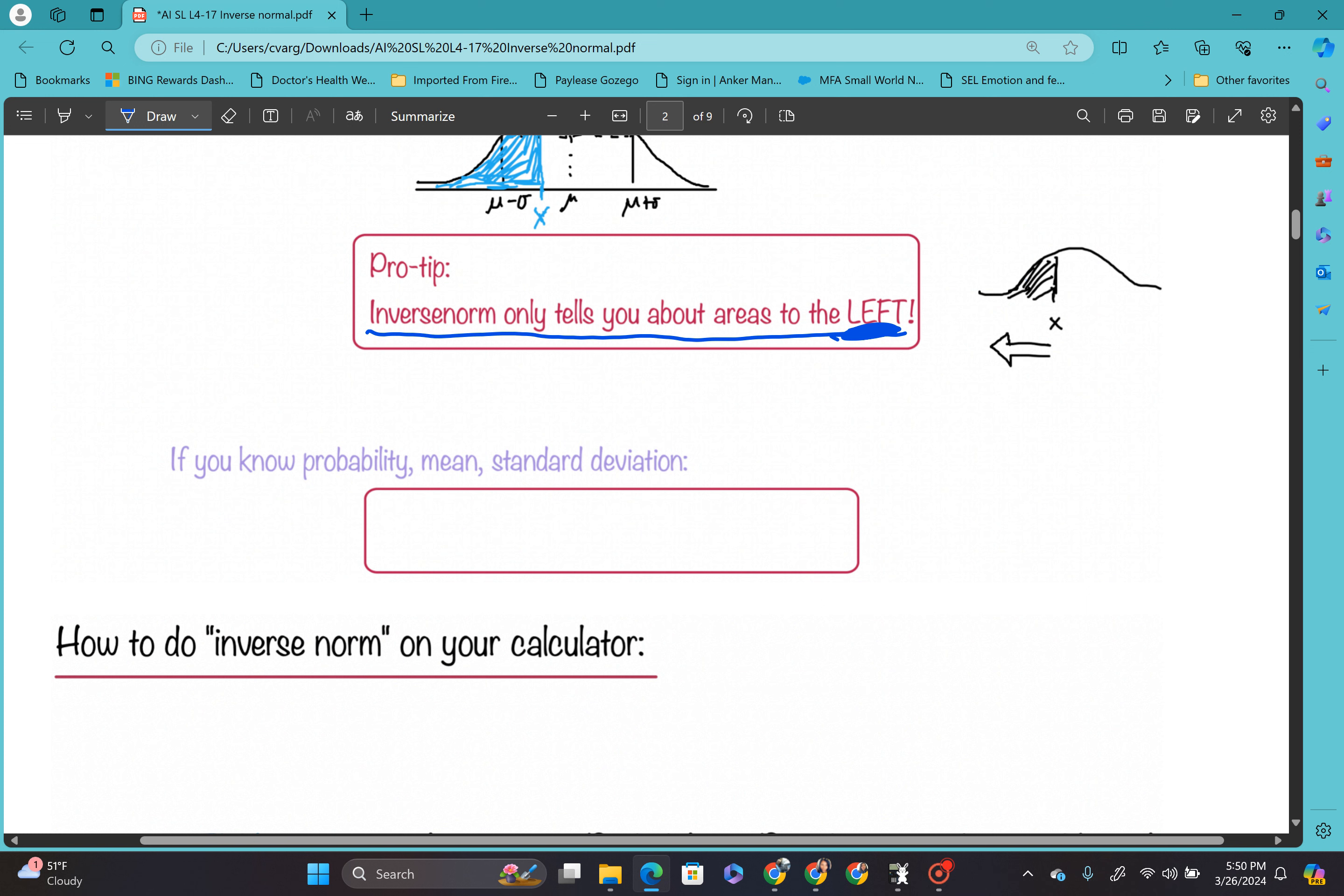And so just to keep in mind about how to do this in our calculator. So our calculator has this function called inverse norm. And what you put in first is you put in the area. Next, you put in the mean. And then you put in the standard deviation. And what that does is it gives you the x value.